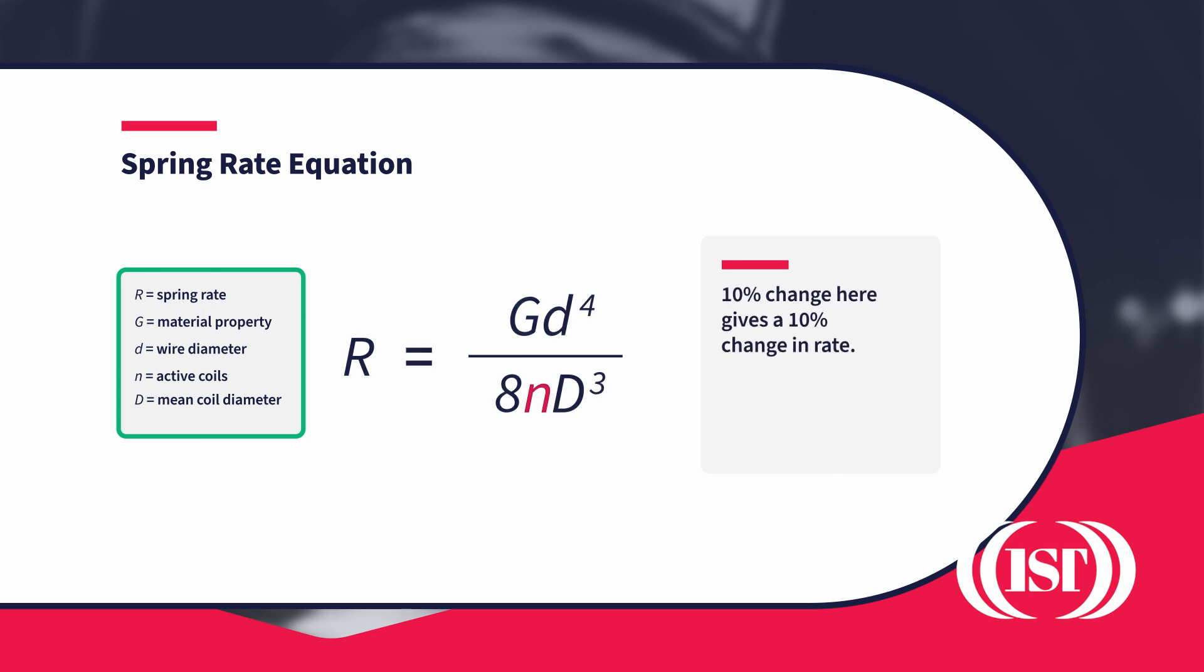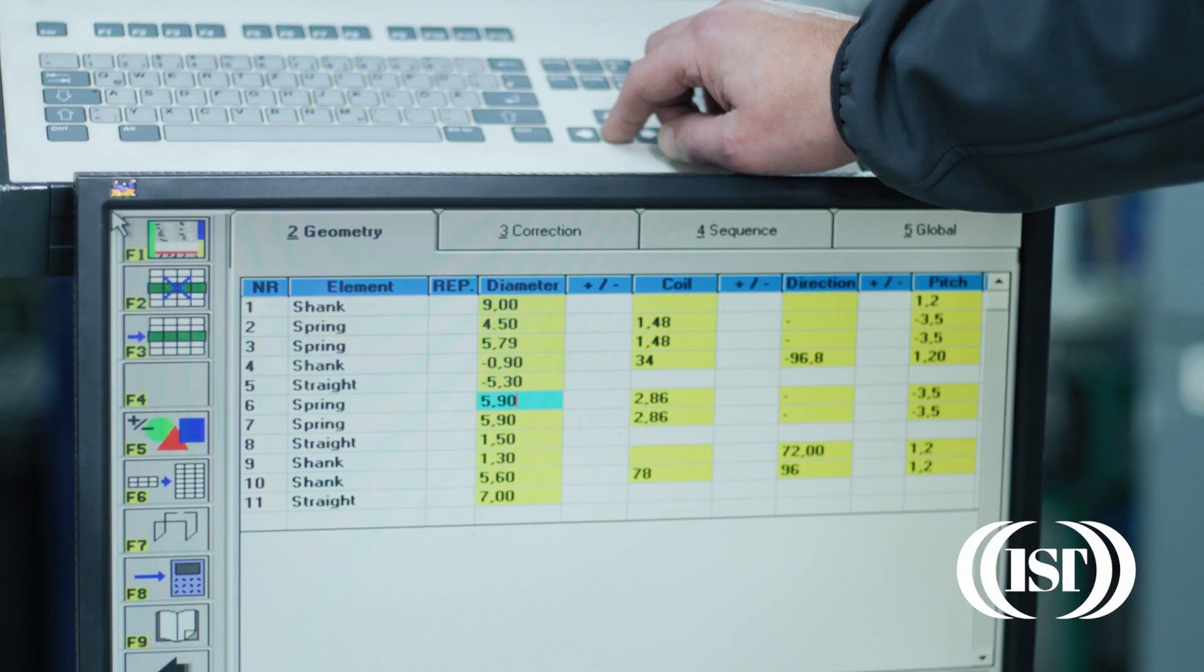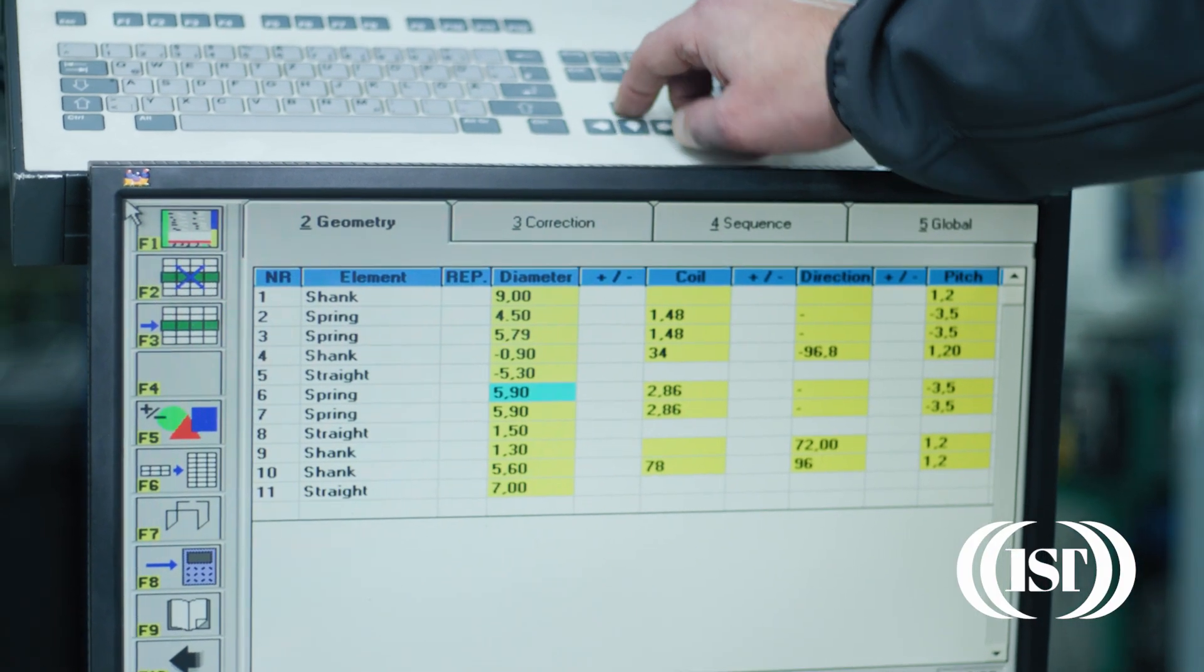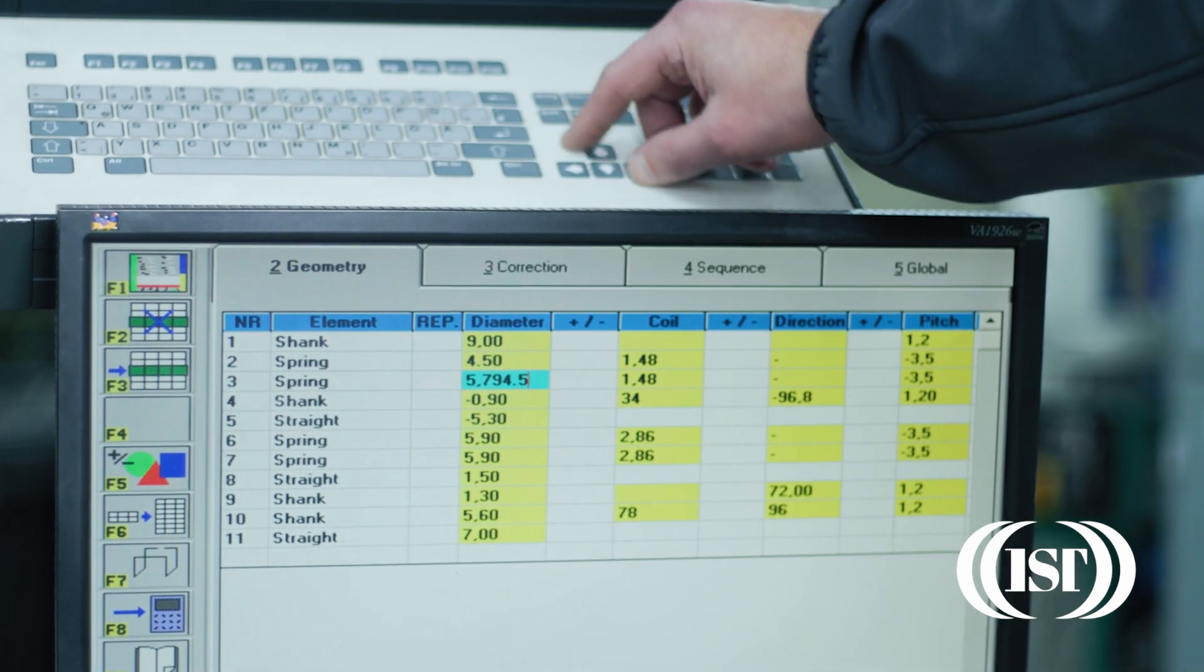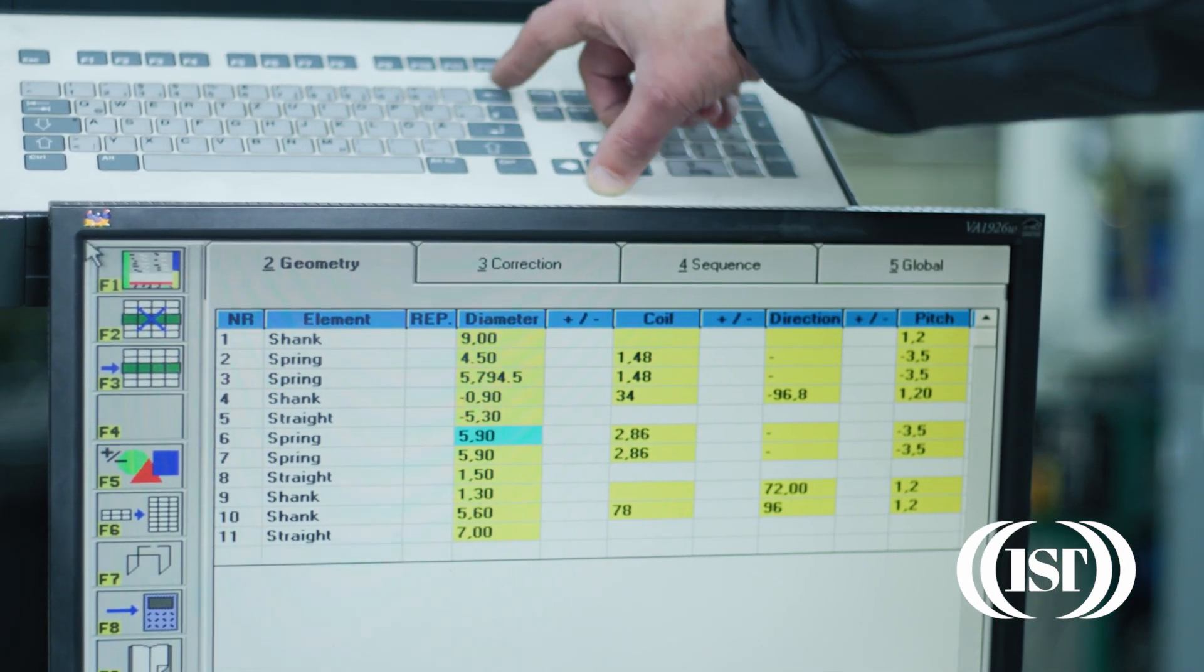This means that if you need a big change in rate, you look at the wire diameter first. Coil diameter is also important, but often you can't change this too much because of the space available.